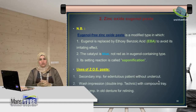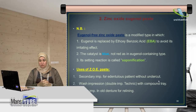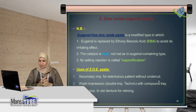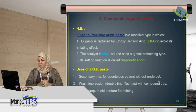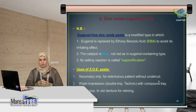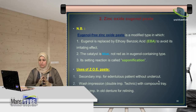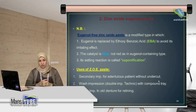Uses of zinc oxide eugenol paste: it is used to take secondary impression for edentulous patients without undercut — secondary because it has good flow, and for edentulous patients without undercut because it is a rigid material. It can be used for the wash impression technique or double impression technique, in which a tray of compound is formed first and then a layer of zinc oxide eugenol is applied for the secondary impression. It can also be used for taking an impression in an old denture for relining if the denture requires relining.